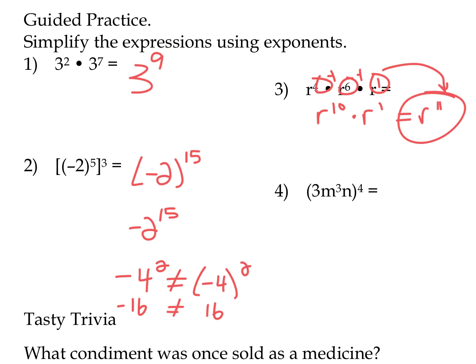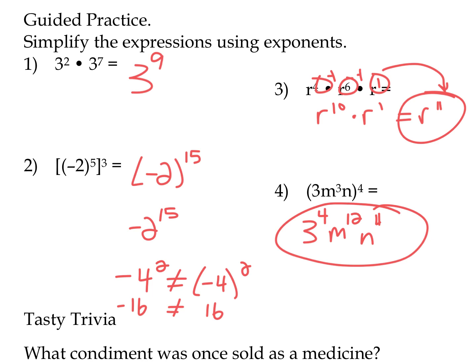In number 4, we have a product in the parentheses, and each piece of that product is going to be raised to the 4th power. Everything in parentheses to the 4th power gives M to the 12th and N to the 4th. Remember to multiply — 3 times 4 is 12, and N has a 1 times 4, giving N to the 4th. If we were going further, we might write 3 to the 4th as 81, giving 81 M to the 12th N to the 4th. It depends on what the directions ask for.